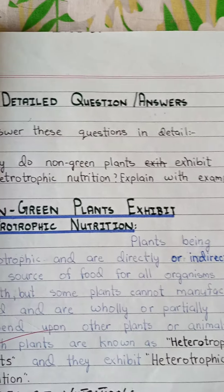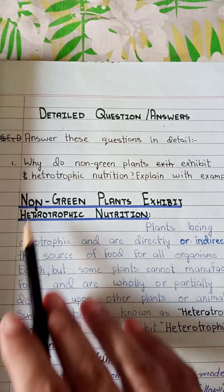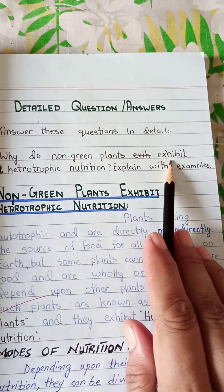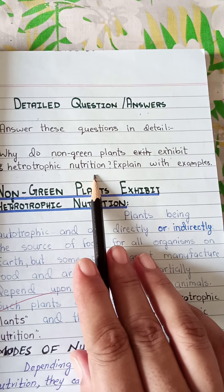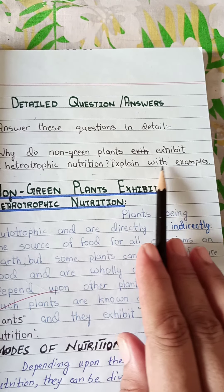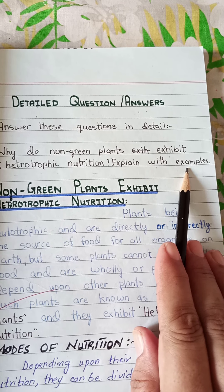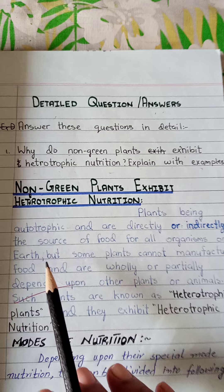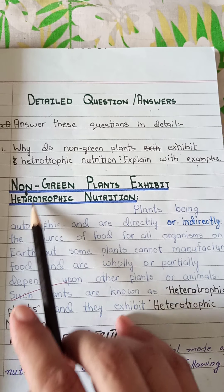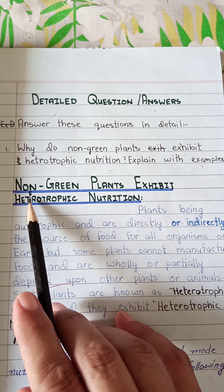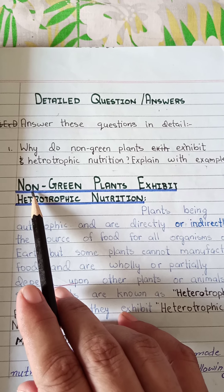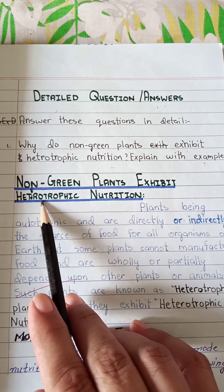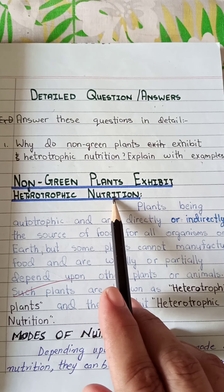We will write the question in the copy with black pointer like this: Why do non-green plants exhibit heterotrophic nutrition? Explain with examples. Give the heading with black cut marker: Non-green plants exhibit heterotrophic nutrition.